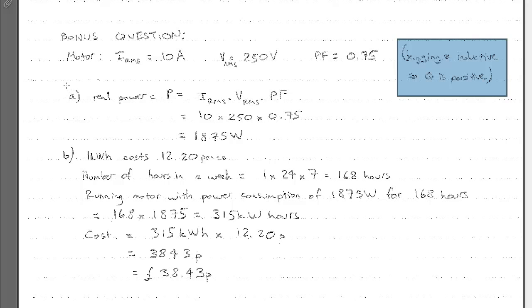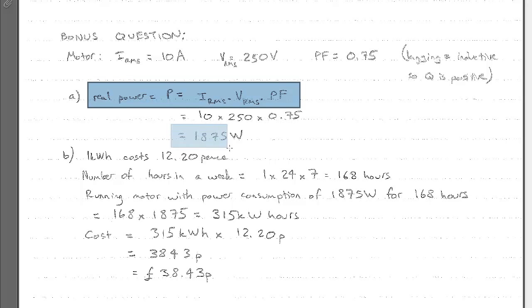So here we go. We're asked to find the real power P. So we know that that's going to be equal to the RMS current times the RMS voltage times the power factor. We've got all of this information in the question, so this bit's quite straightforward. It's just 10 times 250 times 0.75,